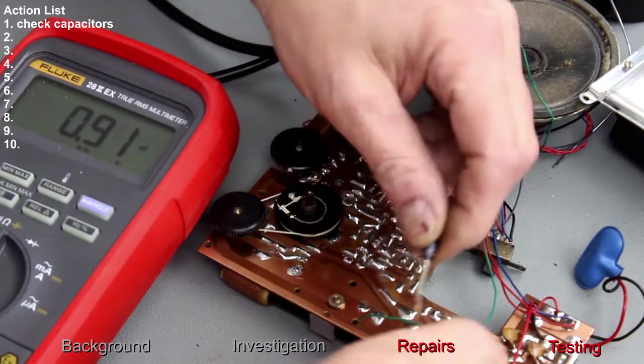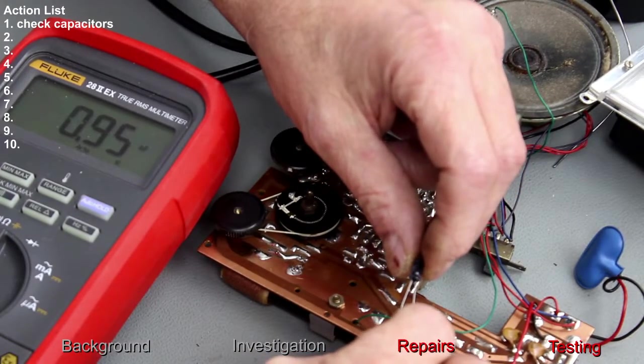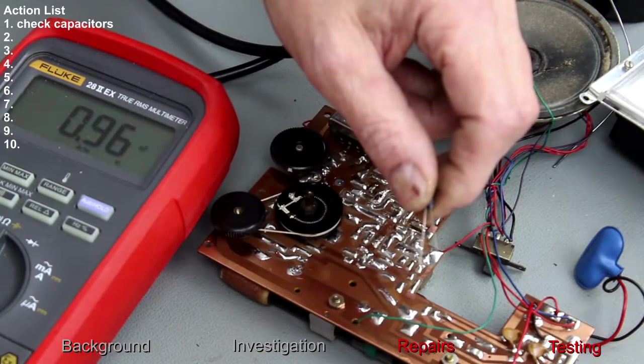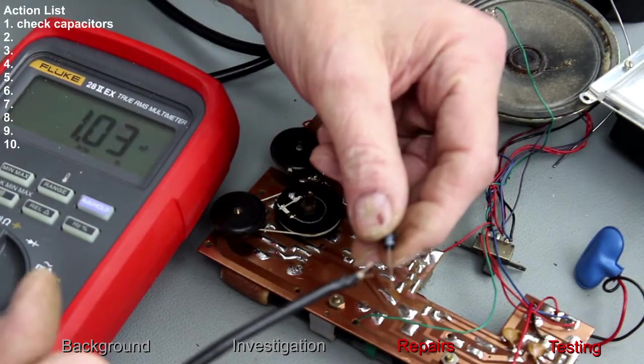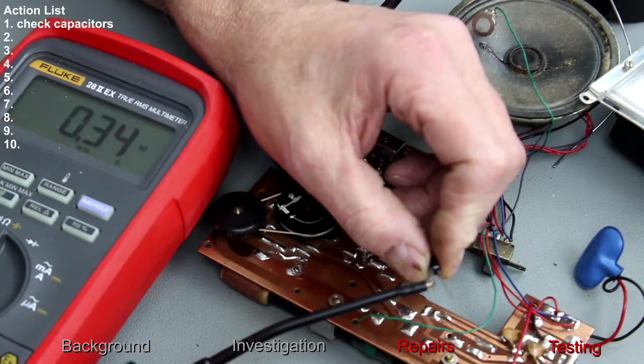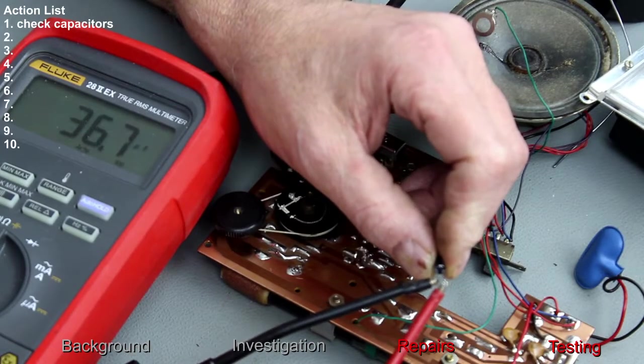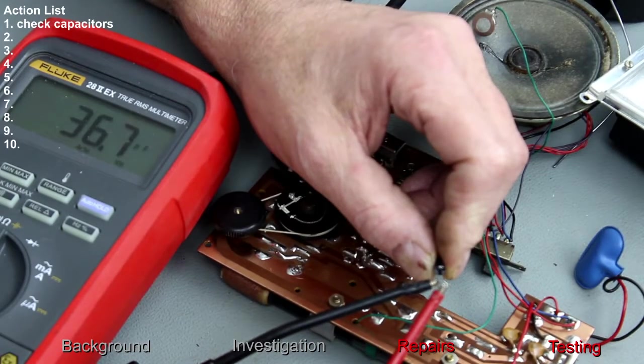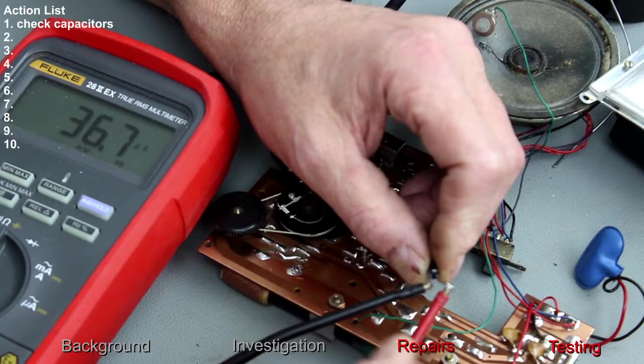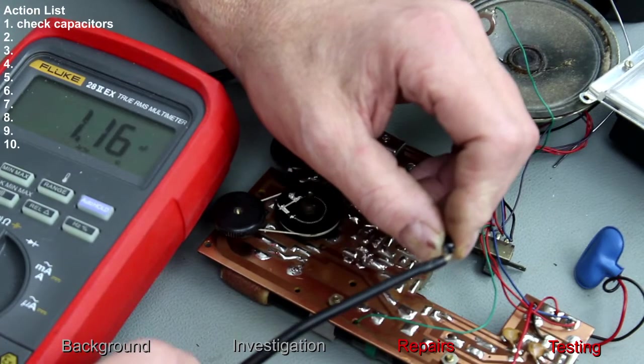I've got a modern day equivalent, this is rated 33 microfarad 16 volt. Let's just put the test meter on it to show how this should work. 33, we've got 36.7 so that's not bad. I'm going to solder that one in.